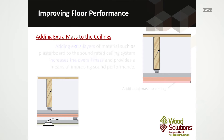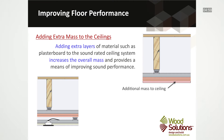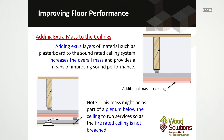Secondly, increasing the mass of the ceilings might be considered. This could include adding extra layers of materials, such as plasterboard, to the sound rated ceiling system, or utilizing a plenum below the ceiling. This is the recommended approach, as it both provides an improved acoustic performance, as well as accommodating the installation of sprinklers and downlights and the running of services, without breaching the fire rated ceiling.